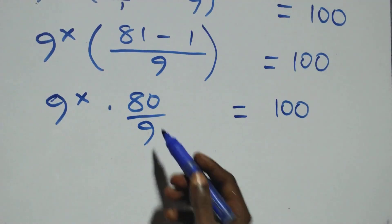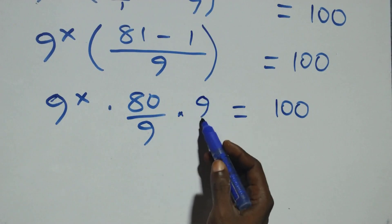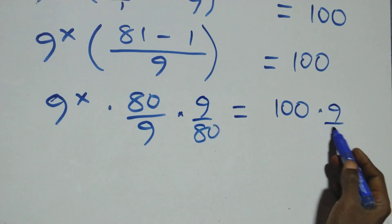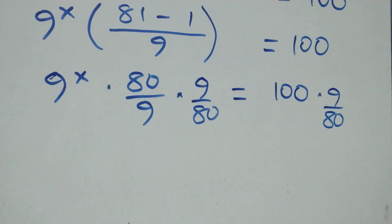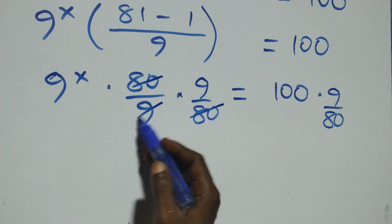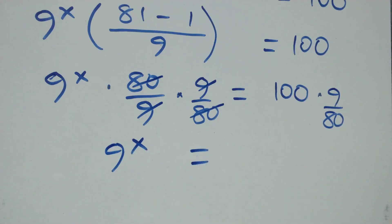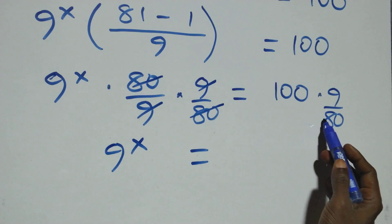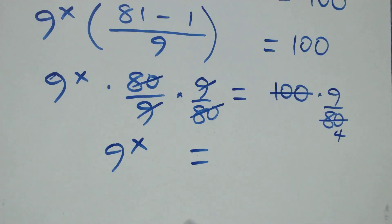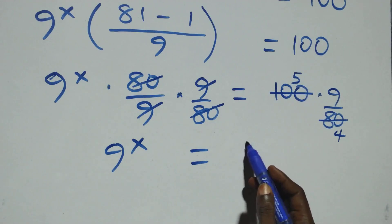From here, to remove this 80 over 9, we multiply both sides by its reciprocal which is 9 over 80. Also multiply this side by 9 over 80. From here, this 80 cancels each other, also 9 cancels each other, and we are left with 9 raised to power x which equals to 100 times 9 over 80.